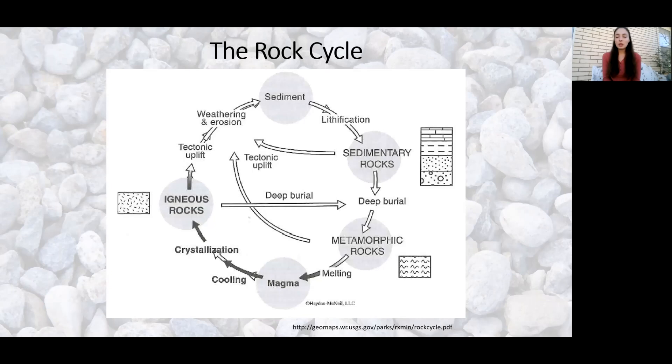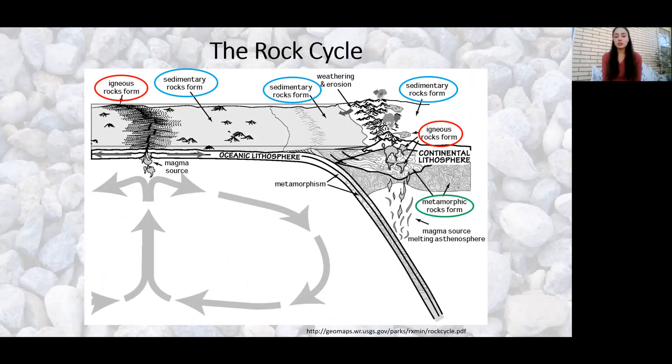Now that was just a very brief intro. To get a little bit more in depth, we can talk about the different pathways in which these things occur. This is a cross-sectional view of a subduction zone showing the rock cycle in a different way, just to get a little bit more applicable to Earth processes.